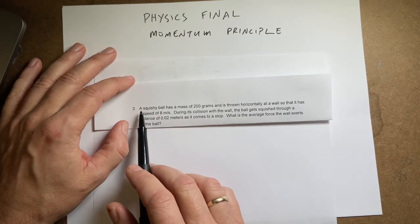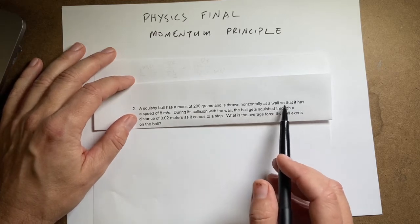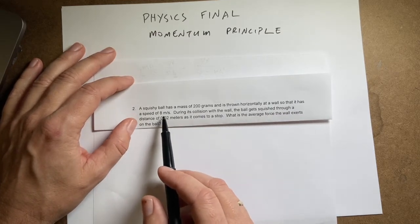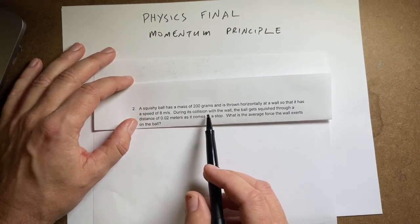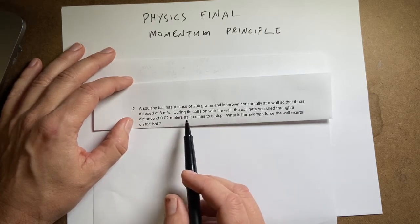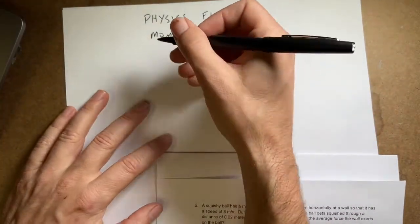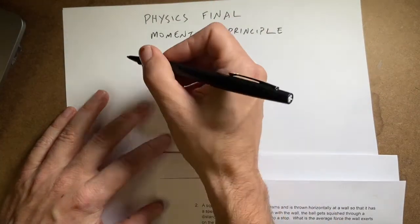So here's the question. I'll read the whole thing, and then we'll talk about it. A squishy ball has a mass of 200 grams and is thrown horizontally at a wall, so that it has a speed of 8 meters per second. During the collision, the ball gets squished through a distance of 0.02 meters and comes to a stop. What is the average force the wall exerts on the ball?